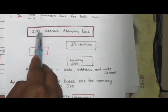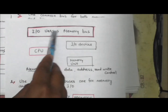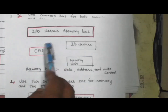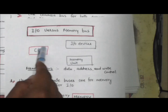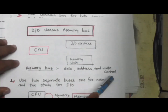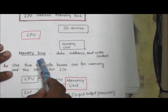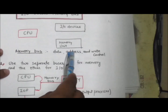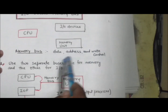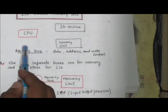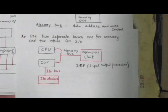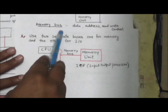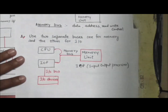Hello friends, welcome back. In this tutorial we will study about input-output versus memory bus. In addition to communicating with input-output devices, the CPU has to communicate with the memory unit also. Like the input-output bus, the memory bus contains data lines, address lines, and read-write control lines. There are three ways that computer buses can be used to communicate with memory and input-output.